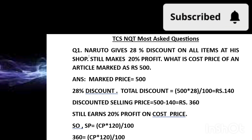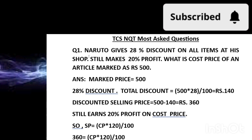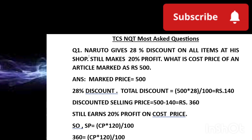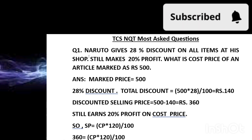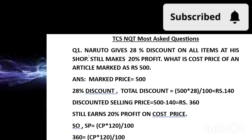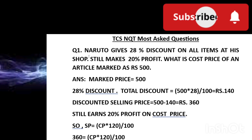Naruto gives a 28% discount on all items at his shop. You have to understand on which price the discount is given — discount is always given on marked price, which is the price marked for a particular item. The next line says he still makes 20% profit. This is possible because discount is given on marked price, but profit is calculated on cost price.